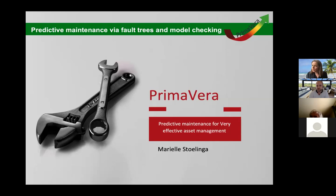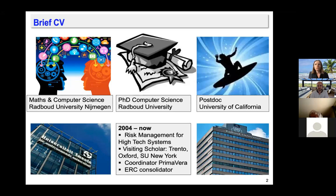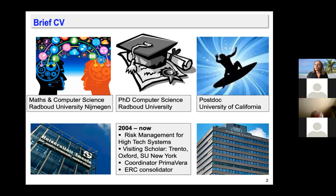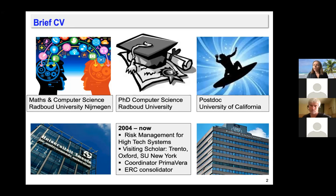It's a pleasure to give a talk today on predictive maintenance via fault trees and model checking. Briefly about myself: I studied mathematics and computer science at the Radboud University in Nijmegen, I did my PhD there, then moved as a postdoc to California, and in 2004 I took up a position in Twente where I'm now a professor of risk management for high-tech systems. I'm also one day a week a professor at Radboud University, and I'm coordinating the Primavera project. I'm also very proud that I have an ERC Consolidator Grant on the integration of safety and security aspects.